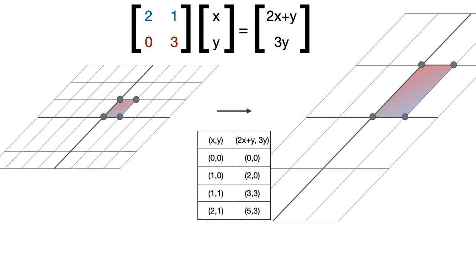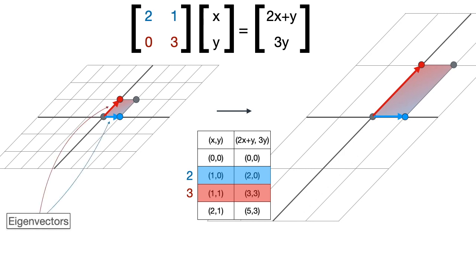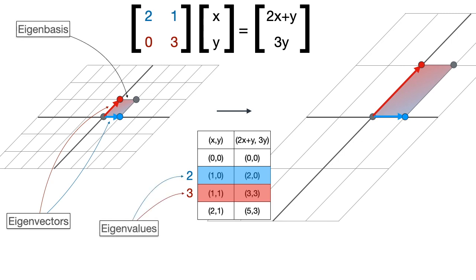Now here's what's interesting. Why do I prefer these bases? It's because in this case the two parallelograms have parallel sides. Notice that the vector 1, 0 in blue gets sent to 2, 0, which is twice itself. And the vector 1, 1 in red gets sent to the vector 3, 3, which is three times itself. Thus the entire linear transformation is defined by the two directions and the two stretches. This may sound simple but it's very important in linear algebra, especially when you have a very large and complicated matrix.